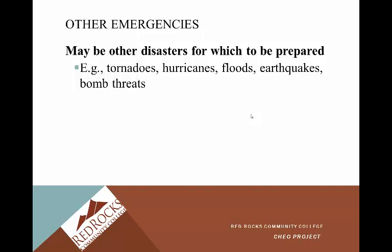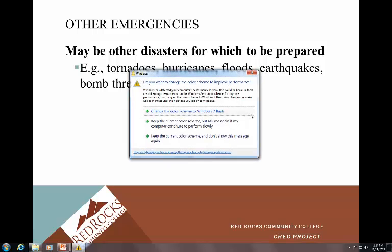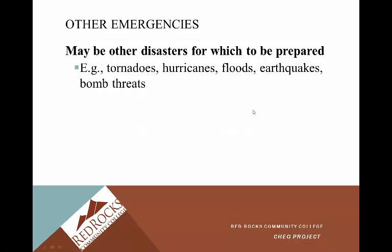Other emergencies. There may be other disasters for which we need to be prepared: tornadoes, hurricanes, floods, earthquakes, bomb threats. When you go to your hospital rotation at Lutheran, we always review what their different codes are. Code Silver is an active shooter. Code Black is a bomb threat. Code Pink is a baby abduction. Your clinical instructor will go over those with you, but just so you know, there are many different scenarios we need to be prepared for, especially in acute care facilities.